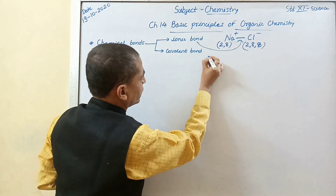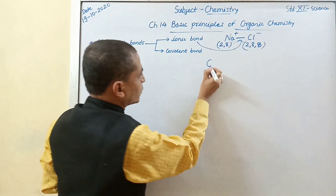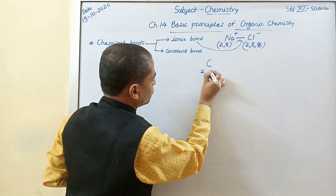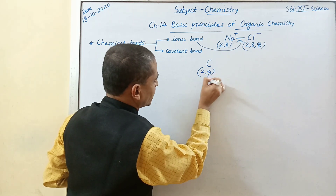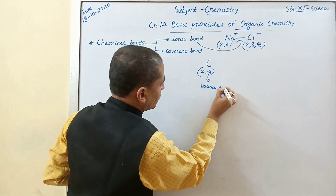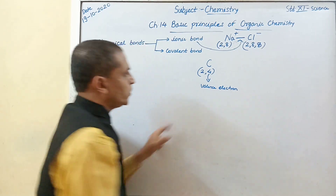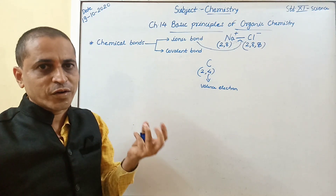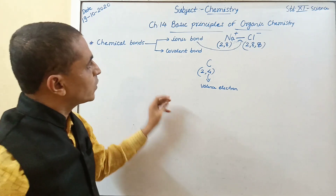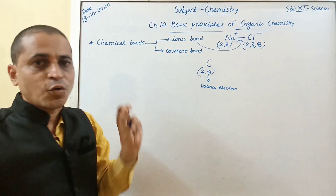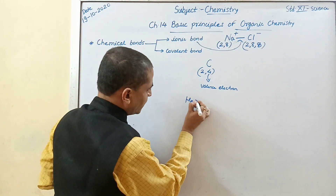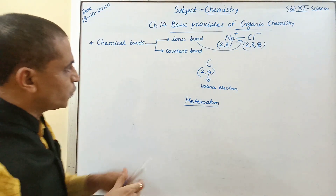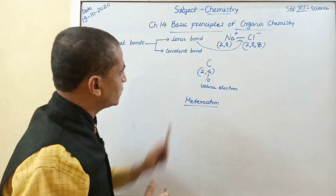Now see the covalent bond. Carbon contains 6 electrons, and its electron configuration can be written as 2, 4. So carbon contains 4 valence electrons. Carbon has the ability to share these 4 valence electrons with other carbon atoms as well as other atoms like oxygen, nitrogen, sulfur, phosphorus, hydrogen, etc. The atoms other than carbon and hydrogen are called hetero atoms. Oxygen and nitrogen are considered as hetero atoms.